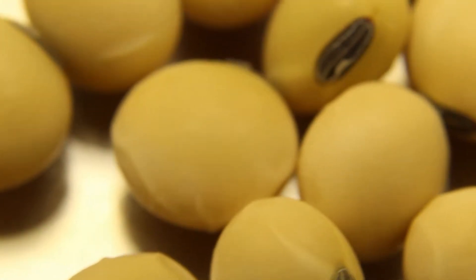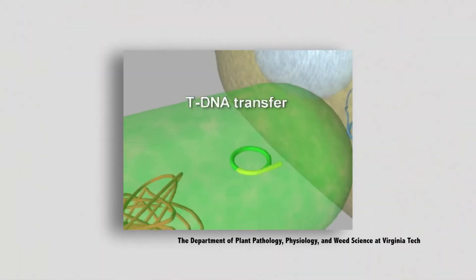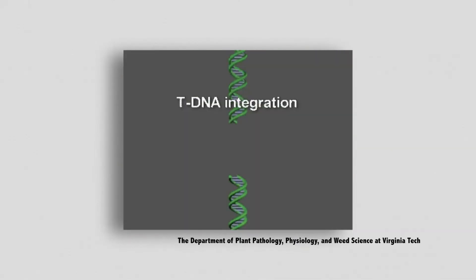To start our transformation process, we use agrobacteria to transform our soybeans. Agrobacteria is a soil bacteria found in nature, discovered around the 1900s to have a really unique ability. This bacteria has the ability to insert its DNA into plant cells and to modify the plant so it makes food for the bacteria to continue to grow.